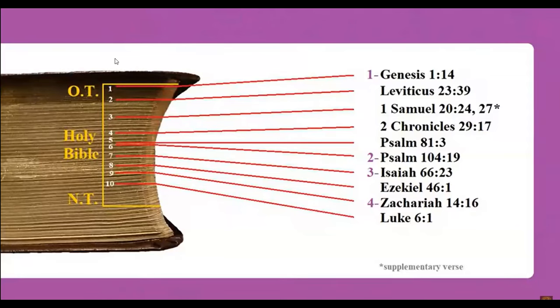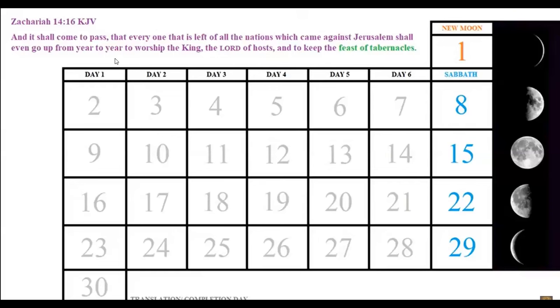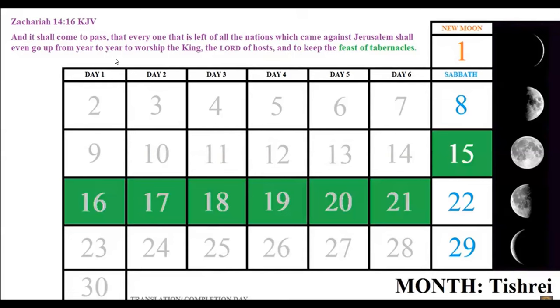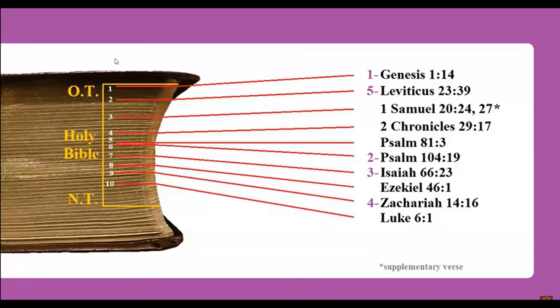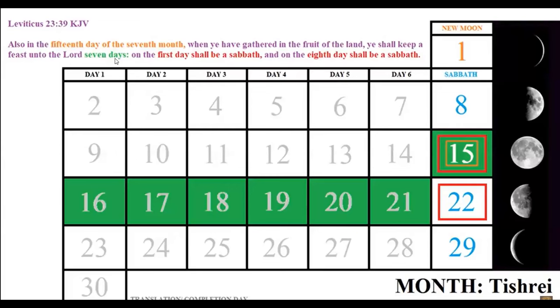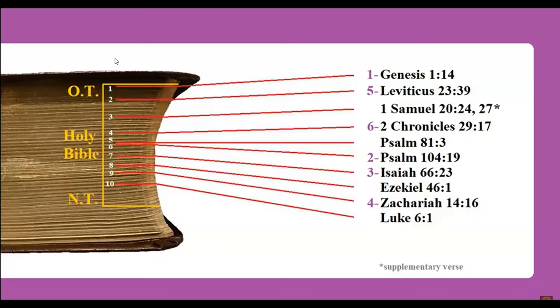But before this happens, we must educate and prepare ourselves. In the millennium of Jesus Christ, you will keep the Feast of Tabernacles. Zechariah 14:16: 'Everyone that is left of all the nations which came against Jerusalem shall even go up from year to year to worship the King, the LORD of hosts, and to keep the feast of tabernacles.' This feast will be based on this very calendar. Leviticus 23:39: 'In the 15th day of the seventh month, you shall keep a feast unto the LORD seven days: on the first day shall be a sabbath, and on the eighth day shall be a sabbath.'